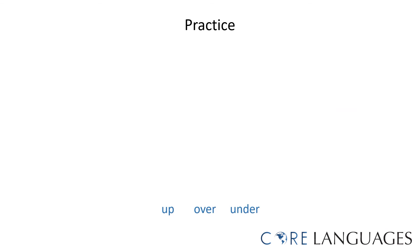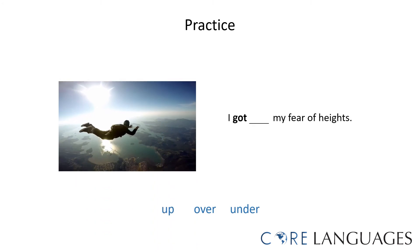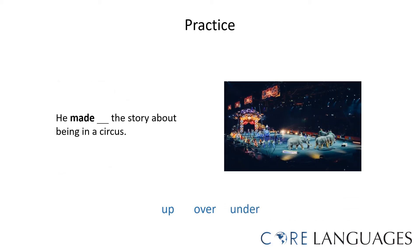Let's look at the following examples and choose between the prepositions 'up,' 'over,' and 'under' to complete the phrasal verb expression. 'I got up / I got over / I got under my fear of heights.' The phrasal verb to get over means to overcome, so the correct sentence is: I got over my fear of heights. For the next example: 'He made up / he made over / he made under the story about being in a circus.' To make up means to invent or to lie about, so the correct sentence is: he made up the story about being in a circus.